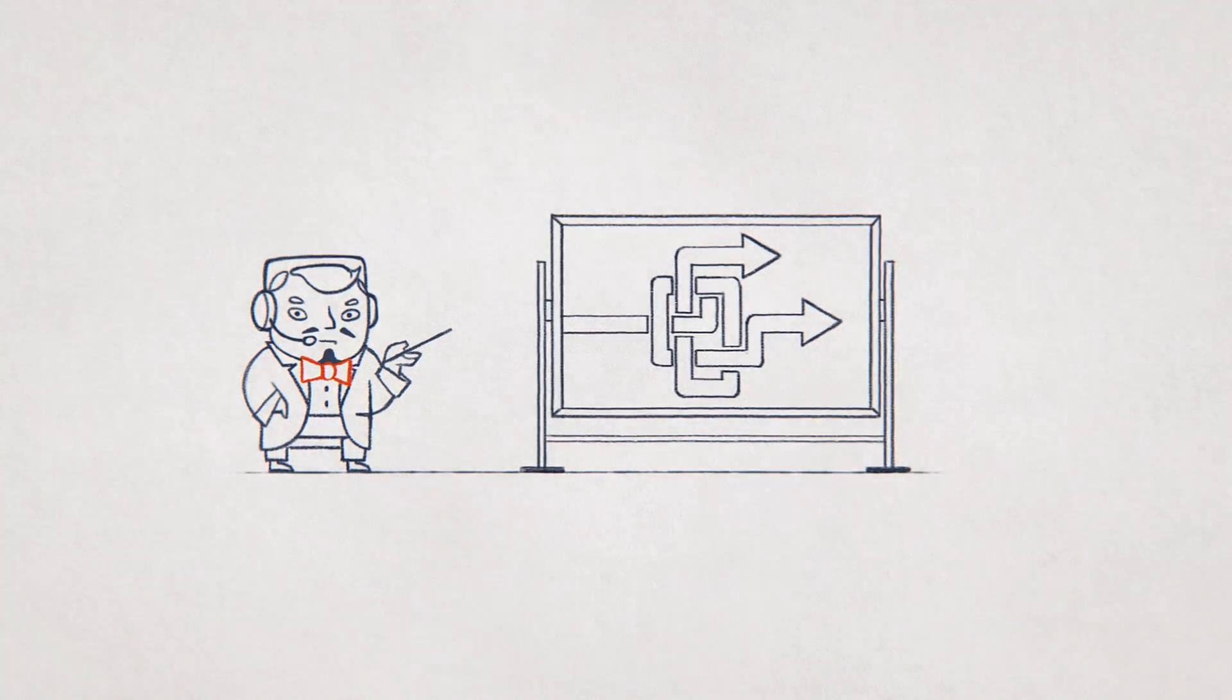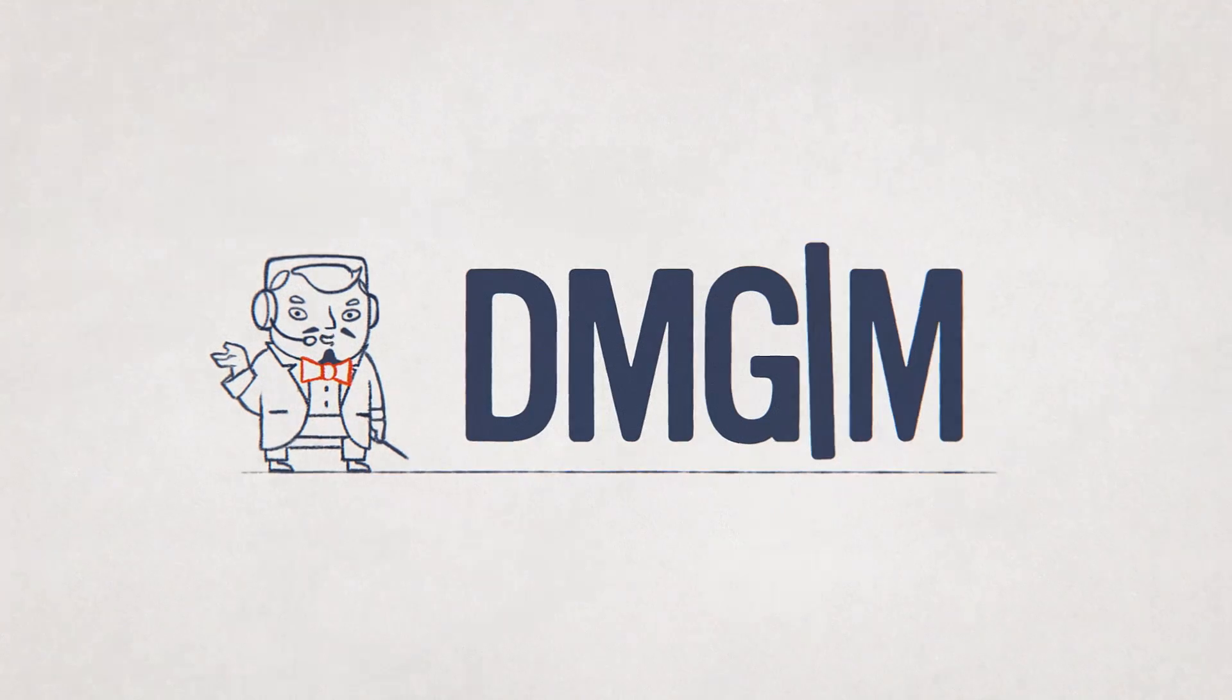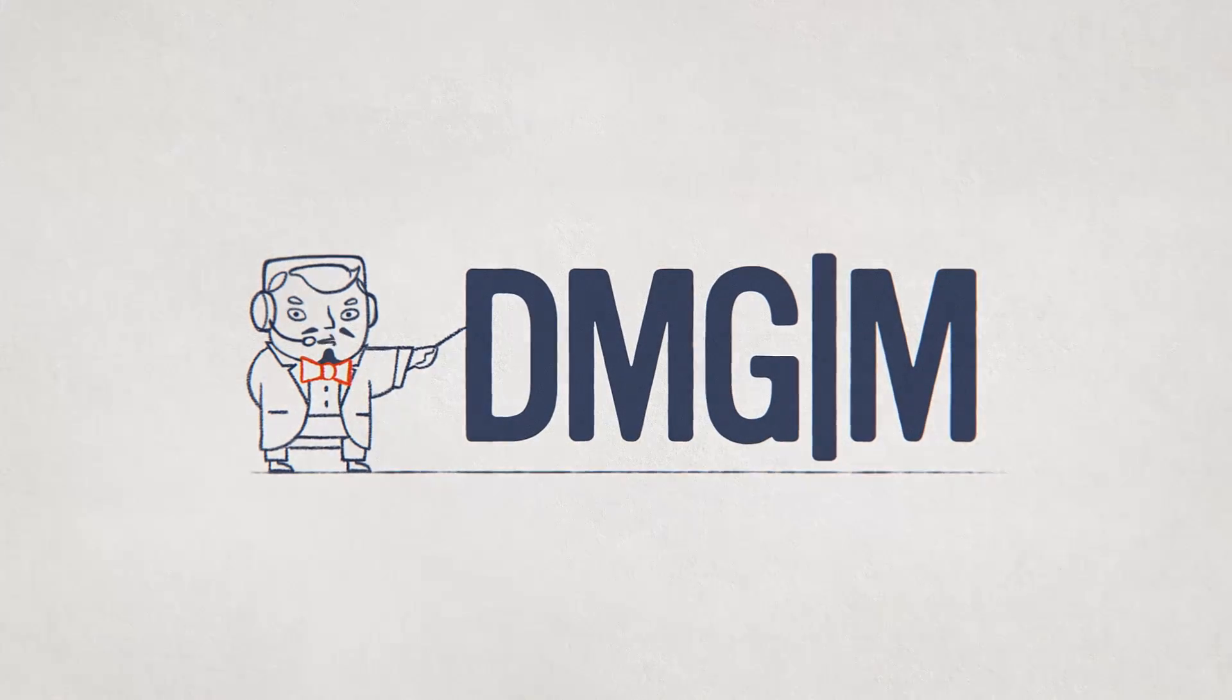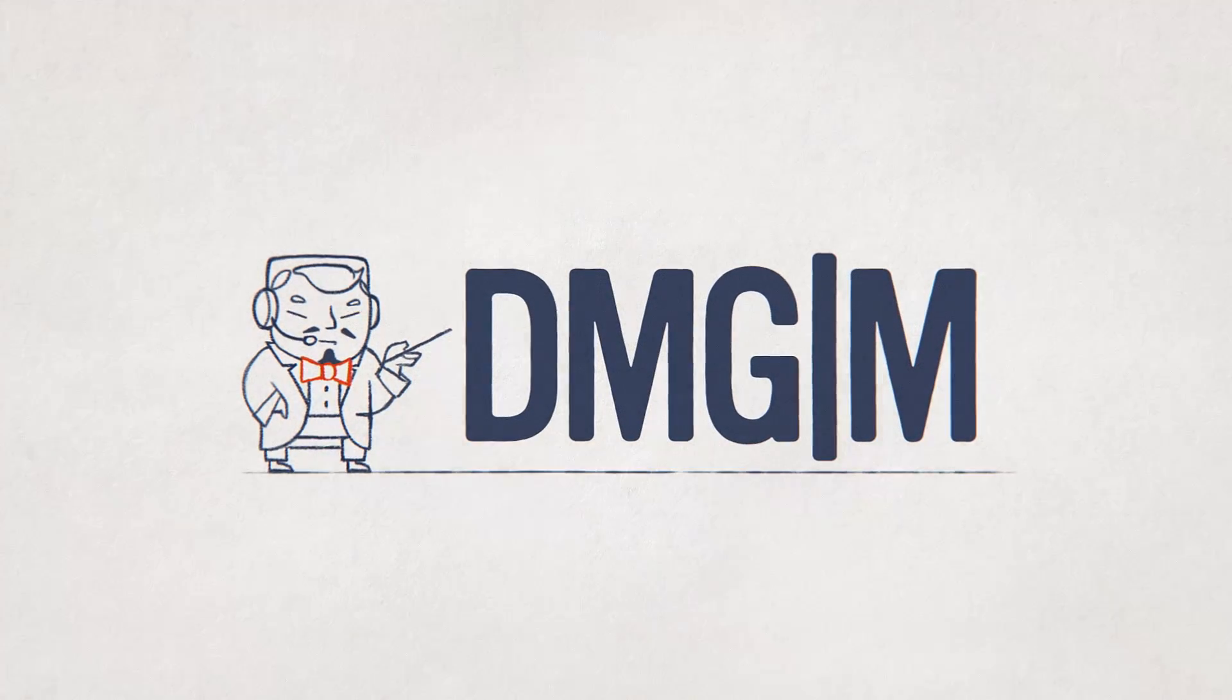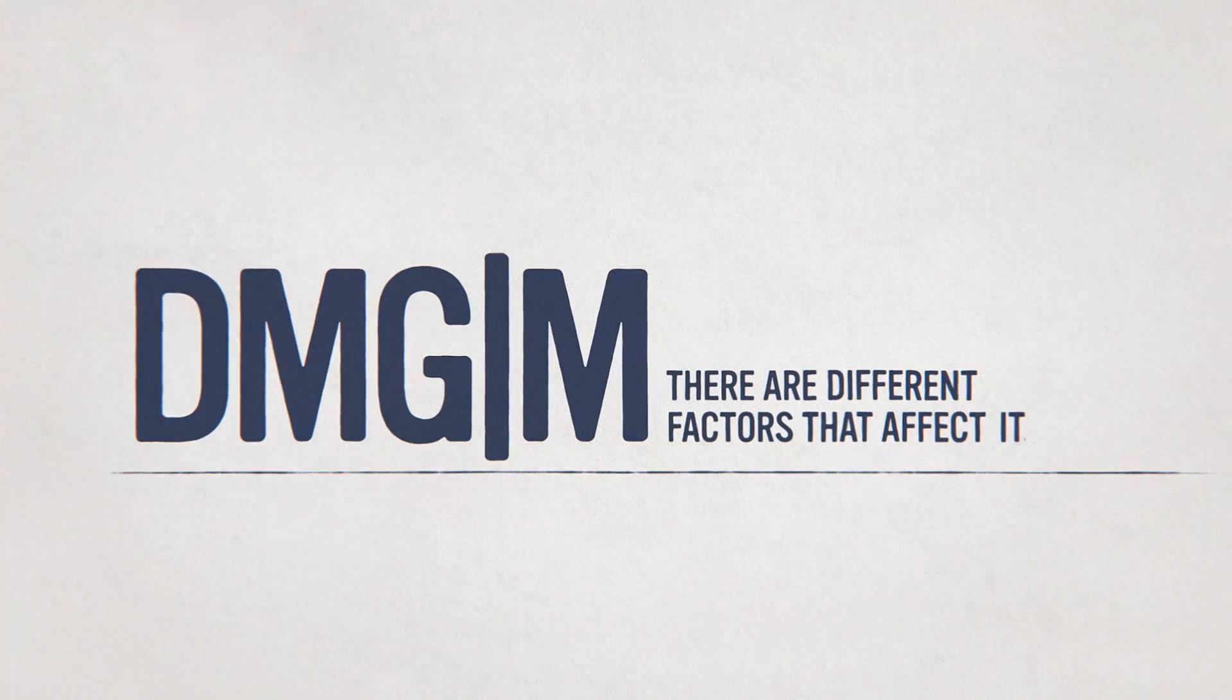There are many ways we can evaluate how a player is doing, and some are better than others. One metric we often look at is damage per minute, also known as DPM. If someone is dealing a ton of damage, that's probably a good thing, but there are different factors that affect it.